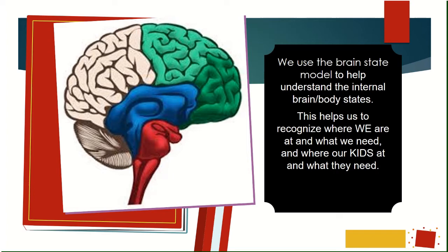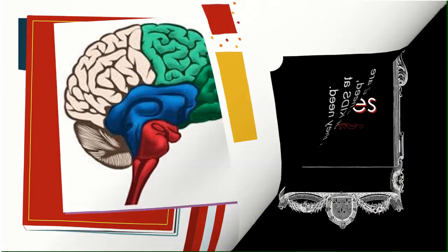Understanding why they do the things they do doesn't give us a magic wand to solve the problem, but it helps us stay a little bit calmer and sometimes it helps us decide how to react. We use the brain state model to help understand what's going on inside their body and inside their brain. When we try to understand where a child is at, we're also learning what's happening inside our own body and our own brain. It helps us recognize where we're at and where the kids are at so we can figure out what they need.